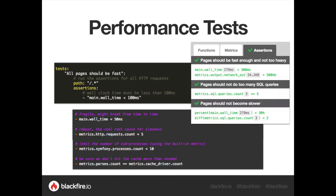For any given HTTP call, you can write tests depending on which library you are using. You can write assertions on SQL statements, the number of templates rendered by PHP, whether there is an email sent synchronously (which is not a good idea in production), the number of sub-processes executed, or the number of HTTP requests. We have a large number of built-in metrics available in your assertions — you don't need to do anything to access them. You can also write your own custom variables based on your specific usage.